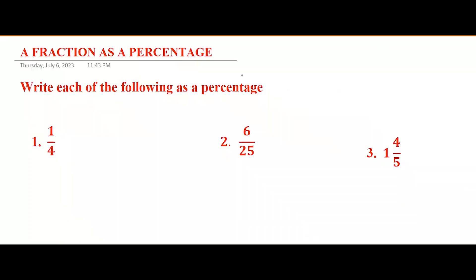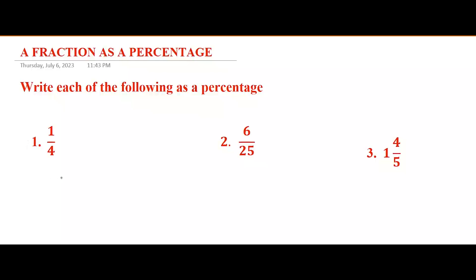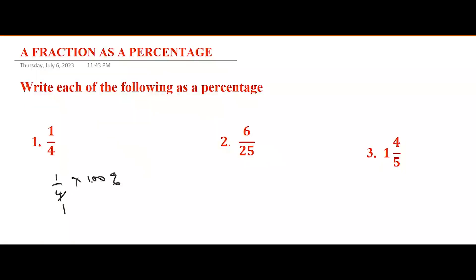Now let's look at how to write a fraction as a percentage. We are asked to write each of the following as a percentage. To write a fraction as a percentage, all you need to do is multiply by 100%. So one out of four as a percentage: take 1/4 times 100%.